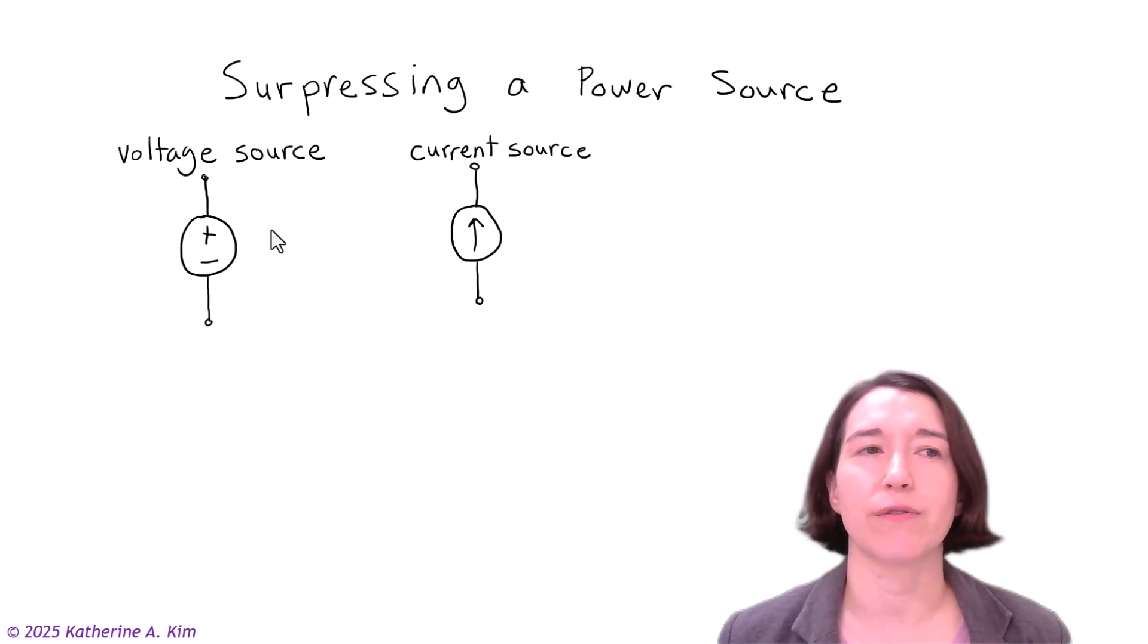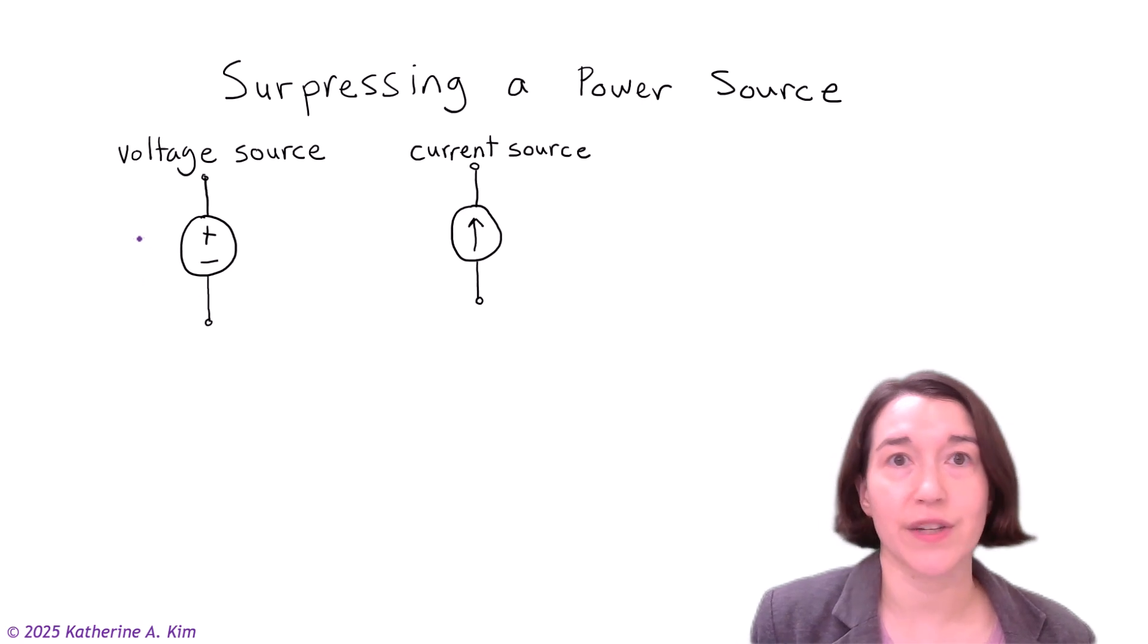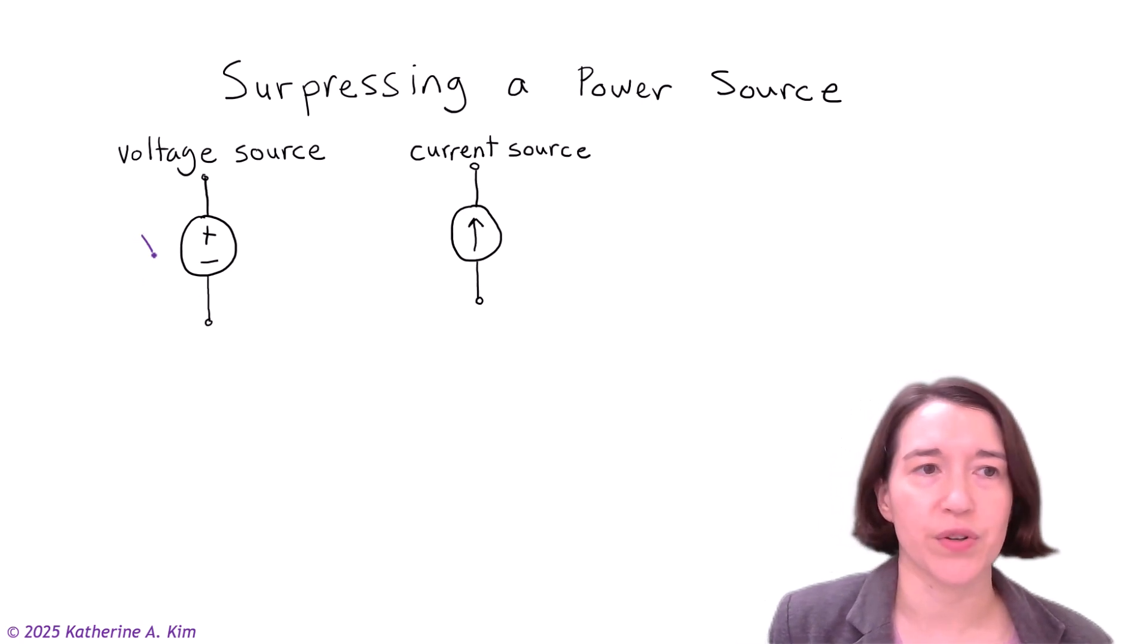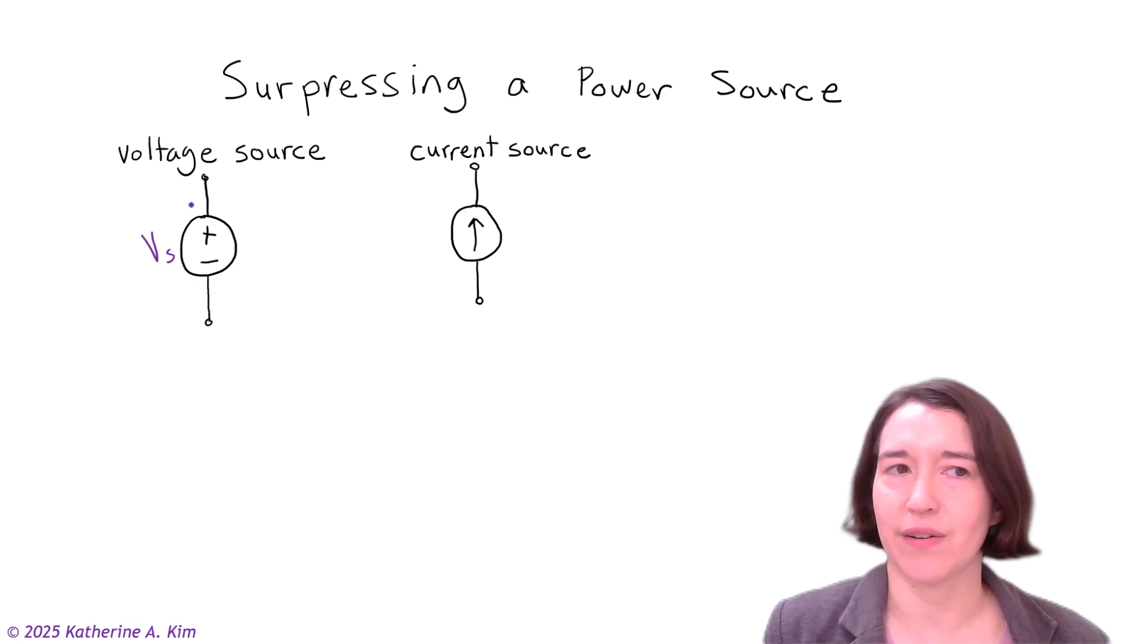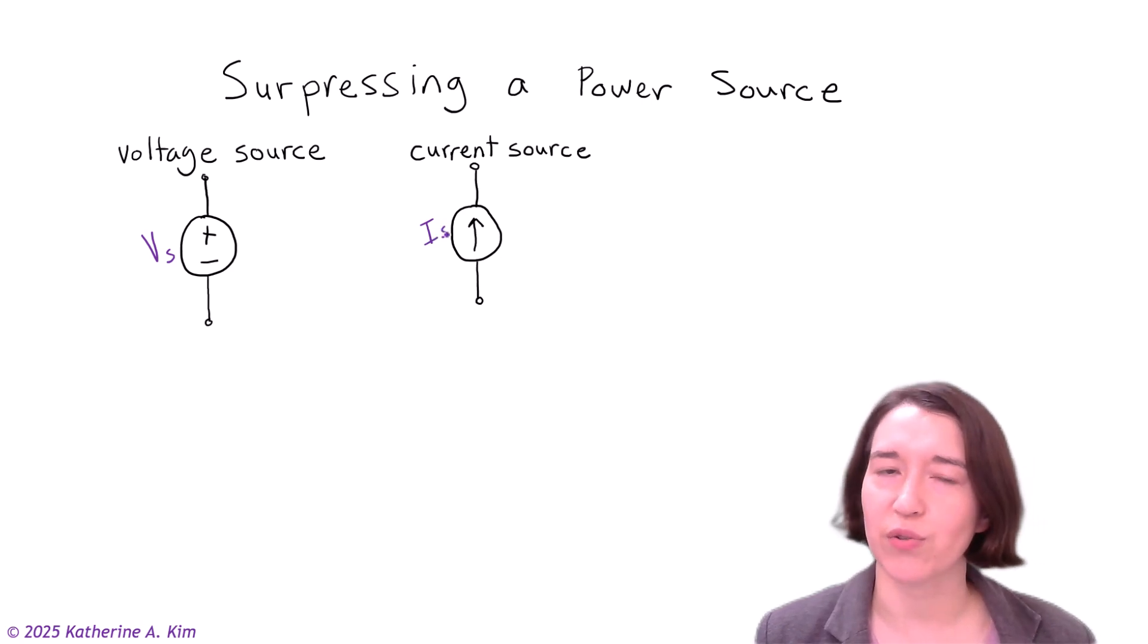And we have independent sources, so we have a voltage source on the left here, we're going to say that it's a voltage of V sub s and it's over the nodes here, and then we have a current source. Let's just say it's I sub s.